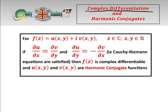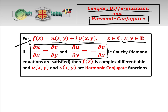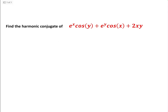Today we're continuing our look at complex differentiation and we're going to look at harmonic conjugates. We have our function f of z, where z is complex, equals u of x,y plus iv of x,y, where x and y are both real. If the two Cauchy-Riemann equations are satisfied, then f(z) is complex differentiable and u and v are harmonic conjugate functions.